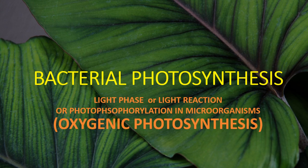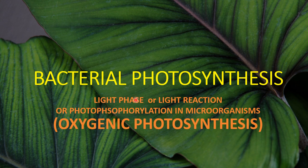Hi everyone. In the previous part of bacterial photosynthesis we had gone through the photosynthetic pigments and the photosynthetic apparatus in detail. Now in this part we will discuss about the phases of photosynthesis, where particularly we will discuss about the light phase and we are also going to discuss about oxygenic photosynthesis in detail.